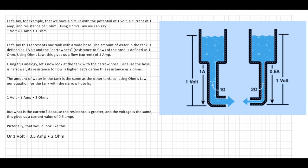So let's just go over it and look at it in a different way. Let's say for example that we have a circuit with a potential of one volt, a current of one amp, and a resistance of one ohm. Using Ohm's Law we can say one volt equals one amp at one ohm. Using our water tower diagram, let's say this represents our tank with a wide hose. The amount of water in the tank defined as one volt and the narrowness, resistance to flow of the hose, is defined as one ohm.